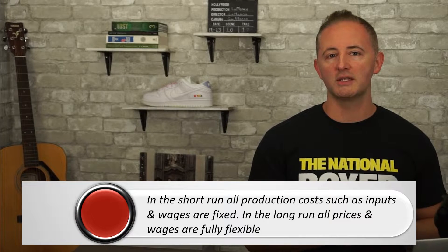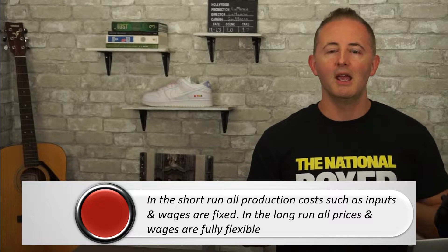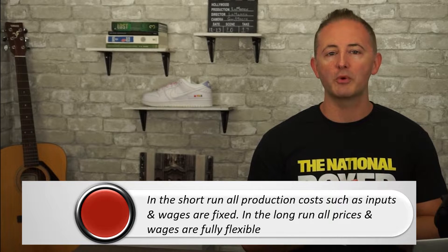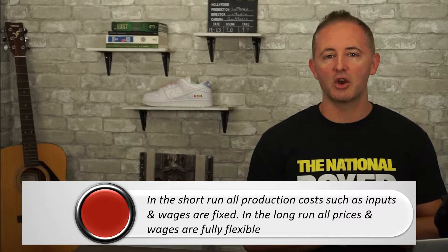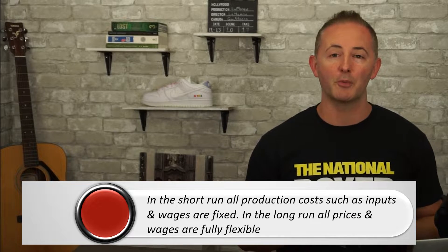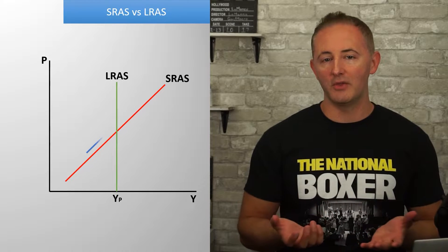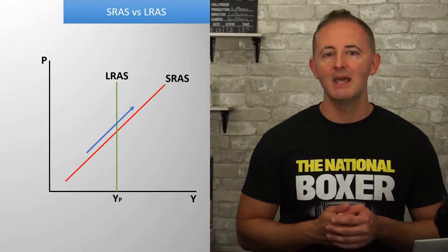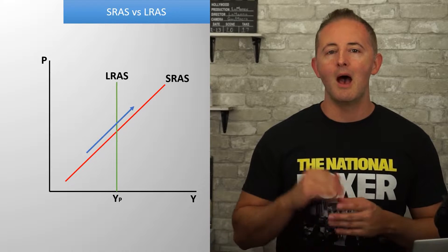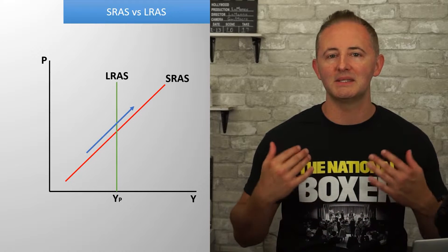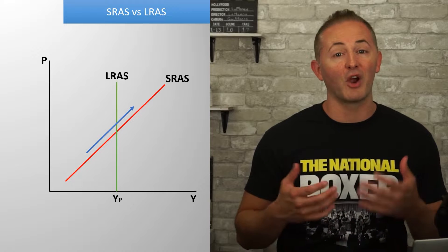In the short run, all production costs, such as inputs and wages, are taken as fixed or unchanged. The SRAS curve is upward sloping because sellers respond to a higher price level by increasing the quantity supplied. They want to do this because sellers like high prices, and they're able to do this because wages and input costs are fixed in the short run, allowing them to continue paying the same prices for inputs and wages while selling their product for a higher price.